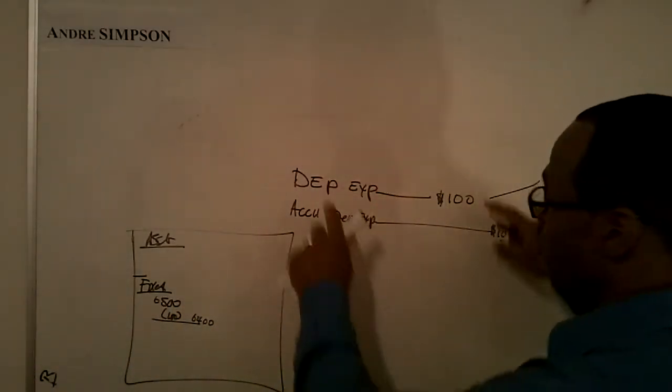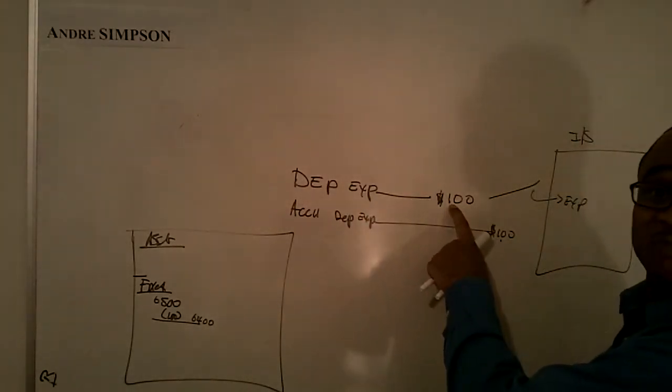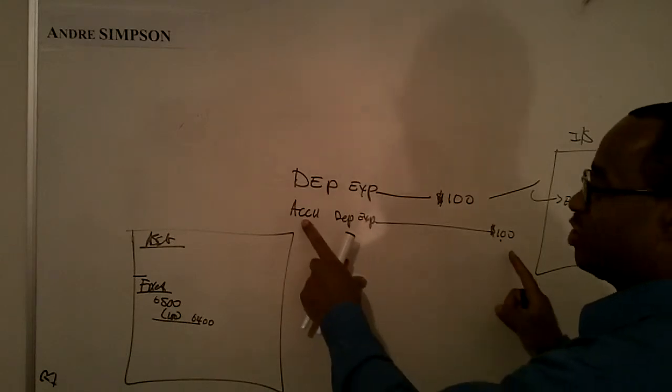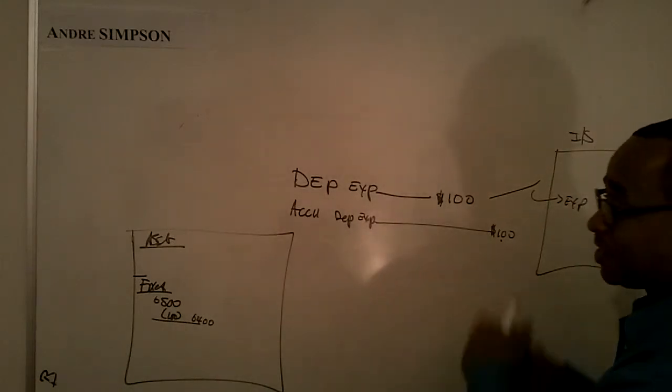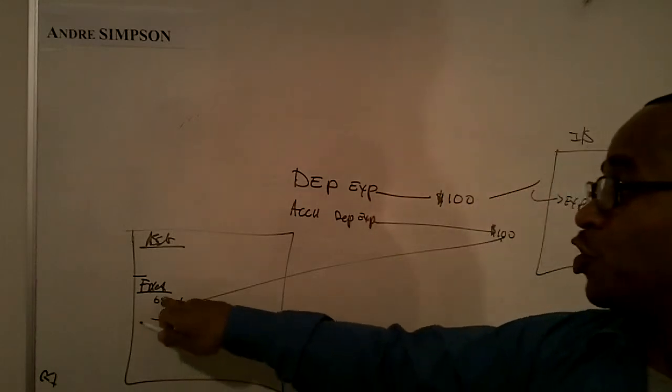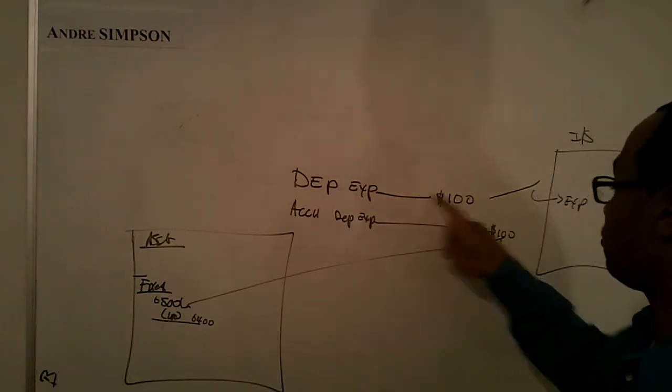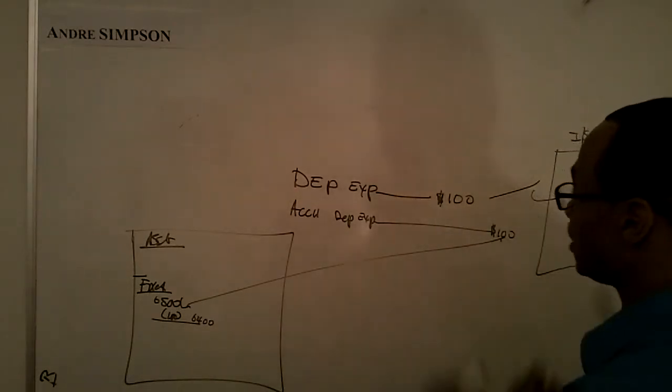So, every month, you're going to make these journal entries here. You're going to debit depreciation expense, and you're going to credit accumulated depreciation. That's going to come to your balance sheet here, and that's going to reduce the net value of the asset. And this will come here to your income statement. So, every month, you're doing this.